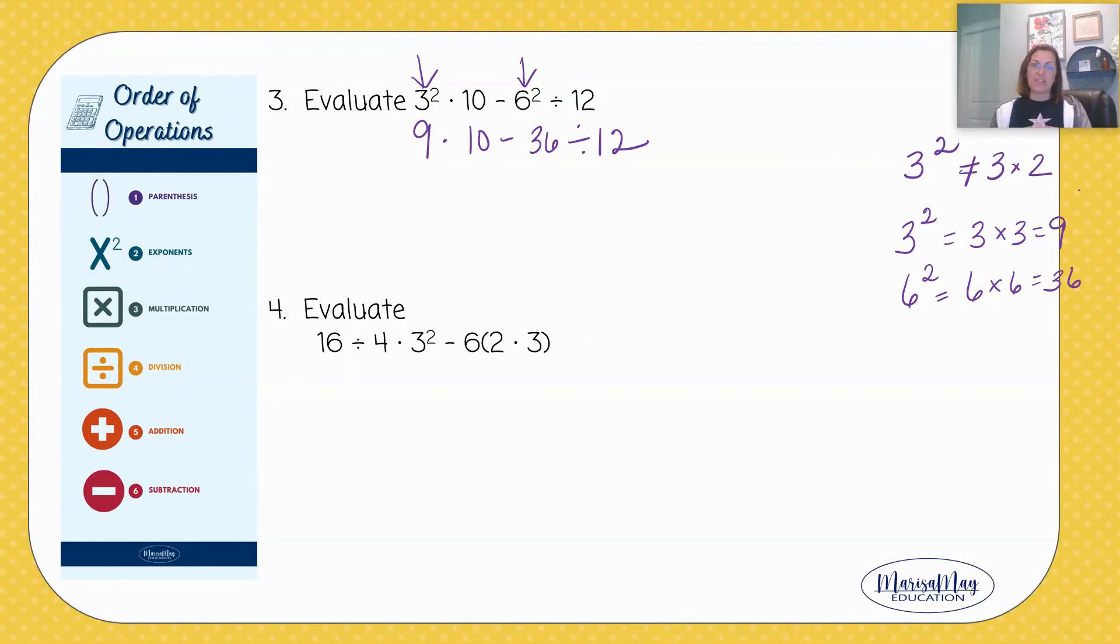Now I've taken care of the exponent, I can go on with my order of operations. Next we have multiply or divide in order from left to right, so the multiply happens first. So 9 times 10 gives me 90, and then I have the divide—36 divided by 12 would give me 3. Now we're down to one operation: 90 minus 3 gives me 87.